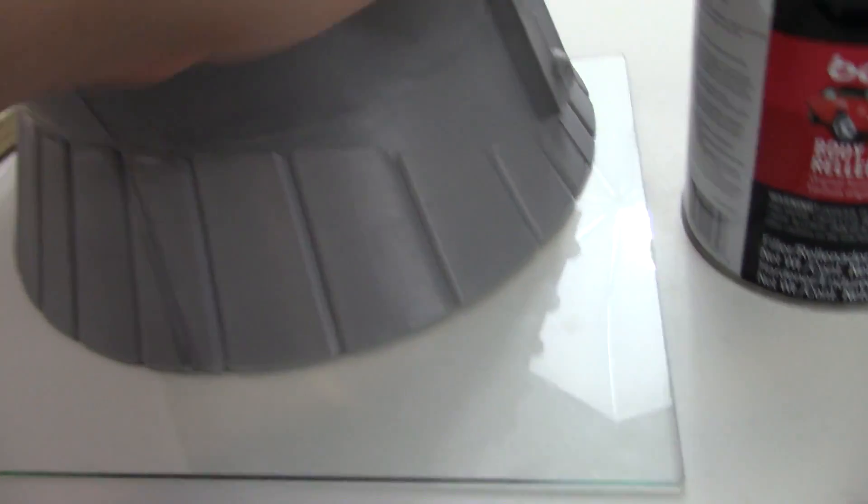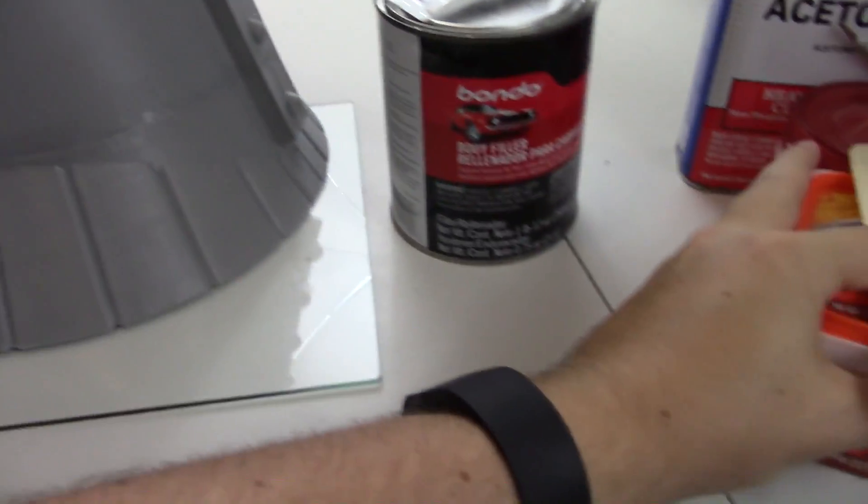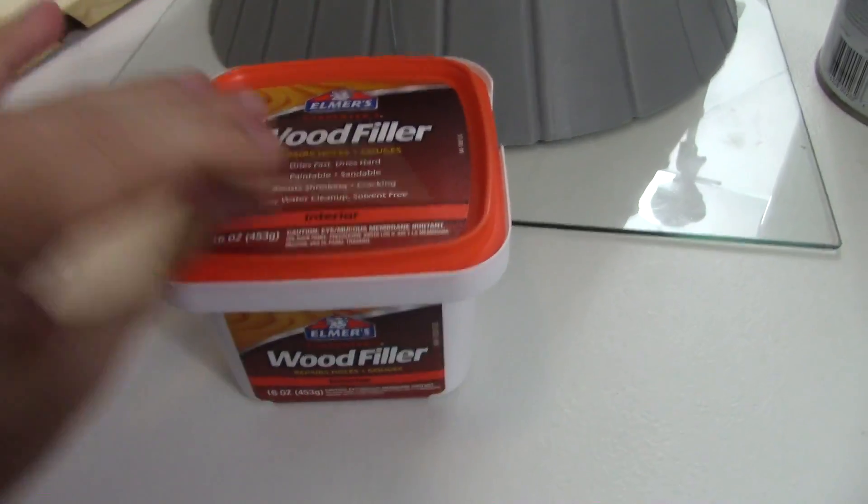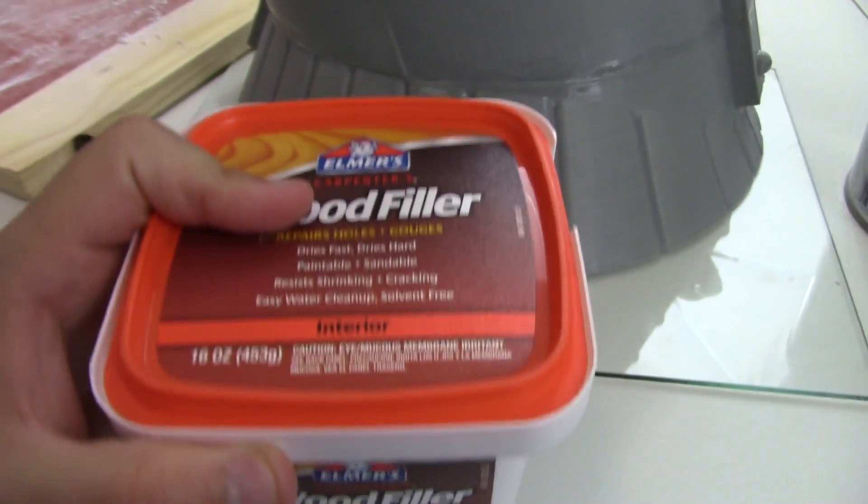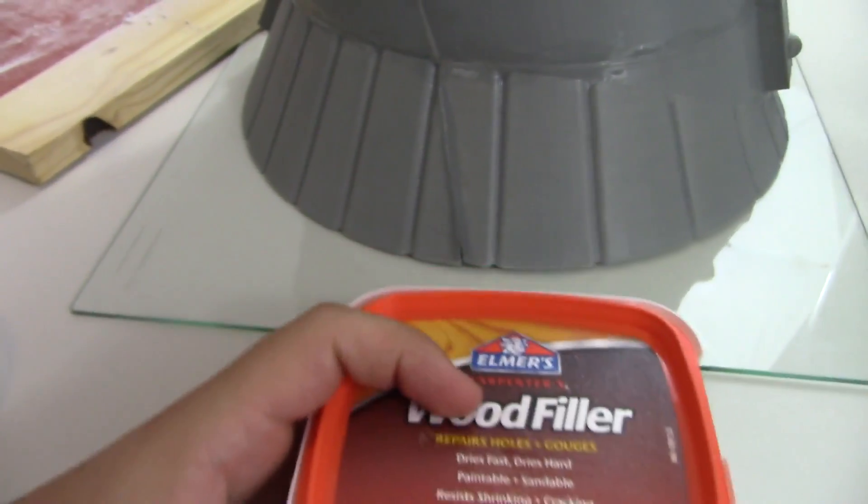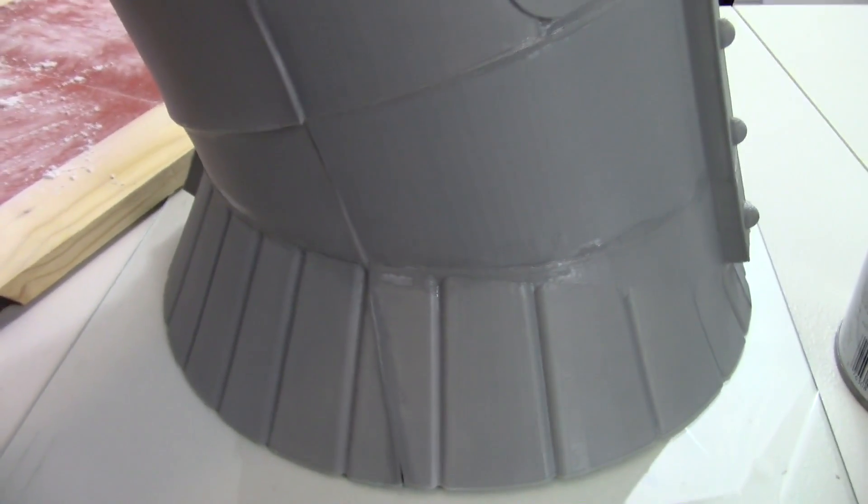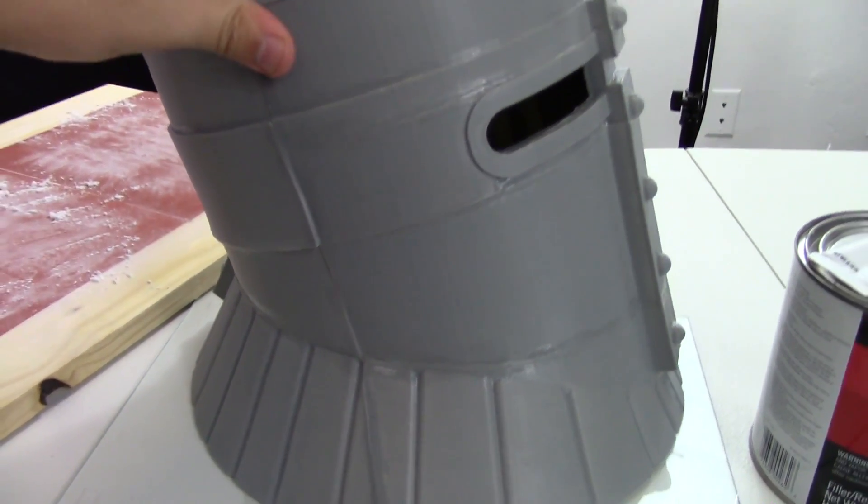When I looked for different types of filler, someone suggested wood filler. So this is just simple wood filler that you'd find at the hardware store, used for obviously filling in wood. And they suggested using that on your 3D prints. So that's what I'm going to do today.